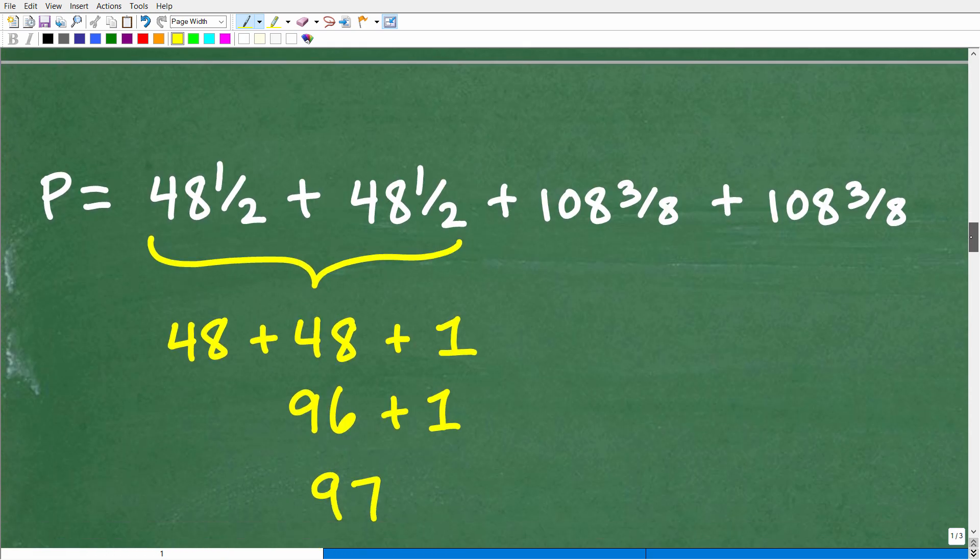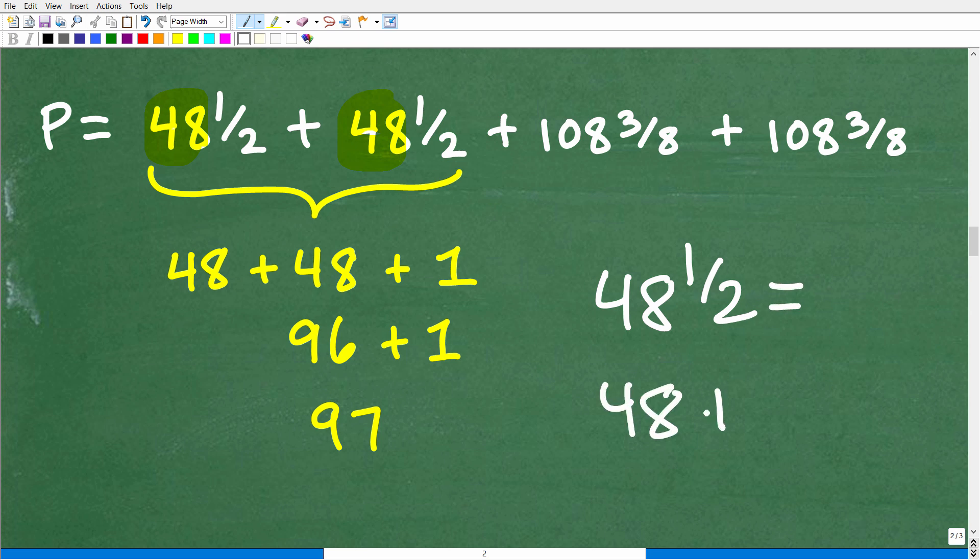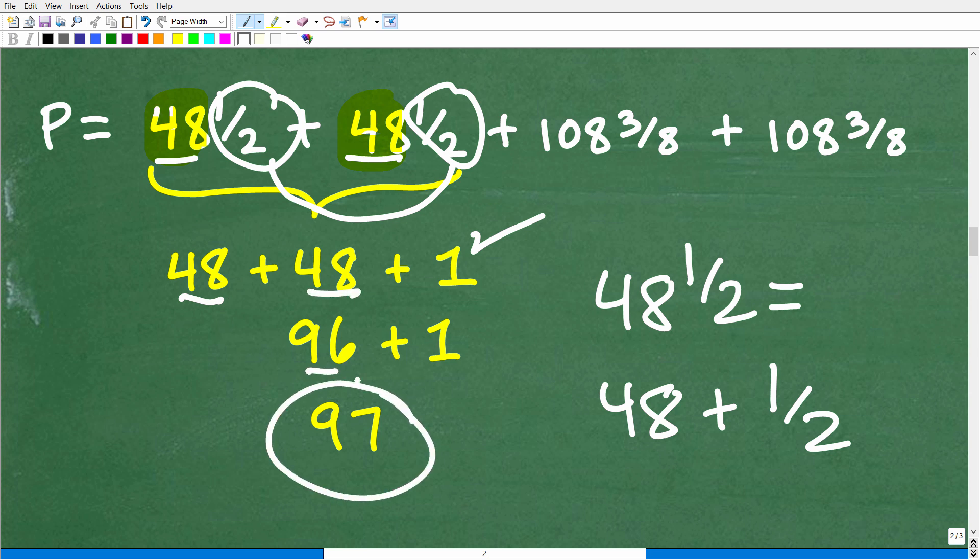So I'm going to look for easy opportunities here, right? So I'm kind of looking at this 48 and 1 half and 48, 1 half, and I'm saying, well, I got 48 and 48. So just remember, with the mixed number fraction, 48 and 1 half, this means 48 plus 1 half. So we can actually kind of split that mixed number fraction. So we have 48 and 48, and a 1 half and 1 half. So 1 half and 1 half is what? Well, hopefully you know that's 1. And then we have 48 and 48. So that's 96 plus 1 is 97.